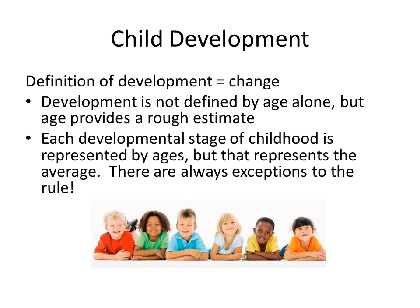The vast majority of what we'll be looking at in this class is how we change — that's the definition of development. We don't look at age alone, but age provides a rough estimate. The developmental stages are estimates, not exact. For example, some children are potty trained before 18 months, others need training well after three years. Some kids begin puberty at 9 or 10; others don't start until 14. We look at things in averages — at every stage there will be exceptions to the rule.